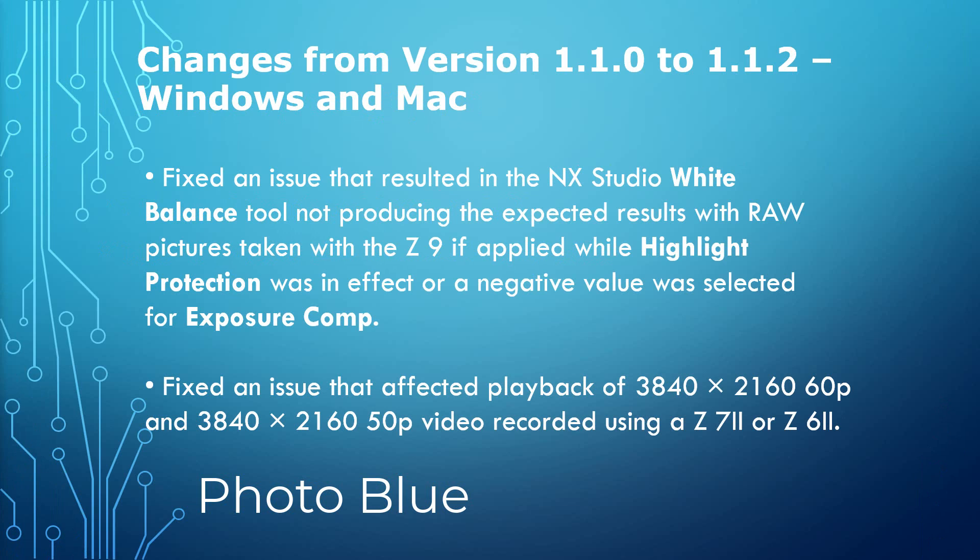There were only really two major changes in this update and they only applied to certain cameras. The first issue fixed an issue that resulted in the NX Studio white balance tool not producing the expected results with raw pictures taken with the Z9, if applied while highlight protection was in effect or a negative value was selected for exposure compensation.